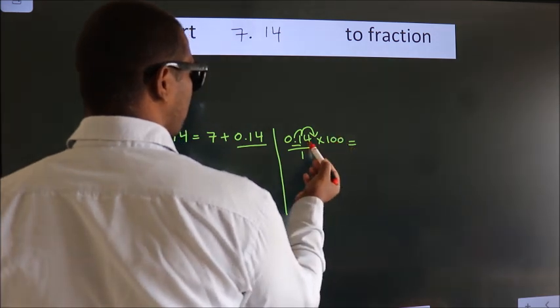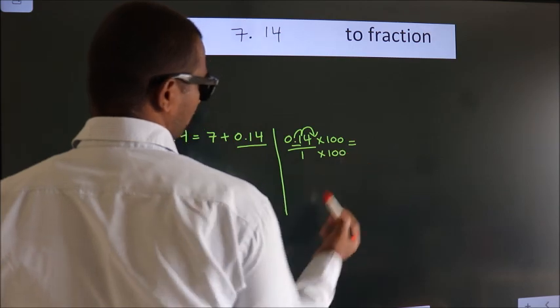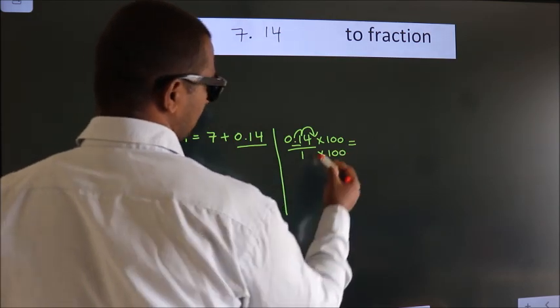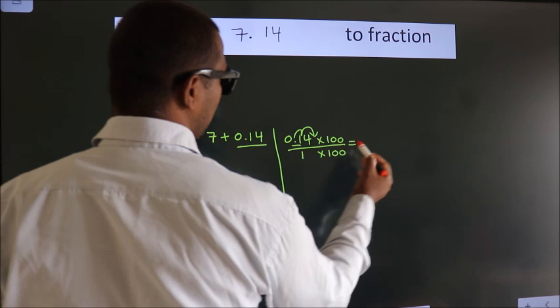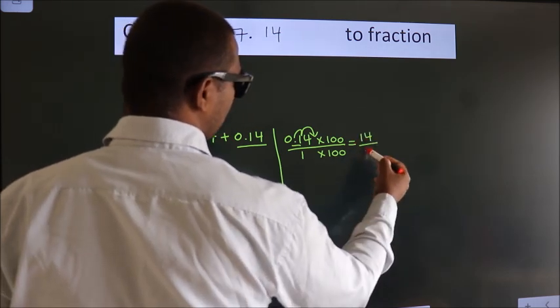Whatever you are multiplying in the numerator, in the denominator also do the same. Next, 0.14 into 100 is 14. 1 into 100 is 100.